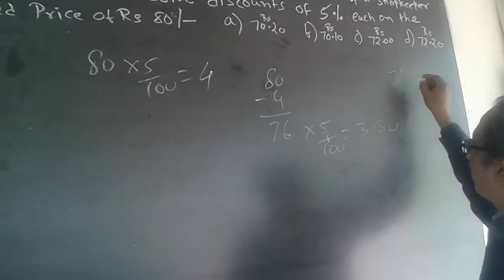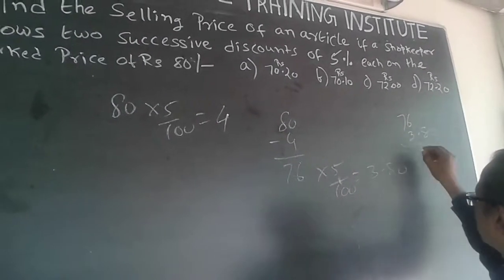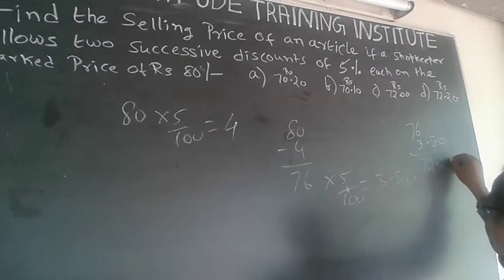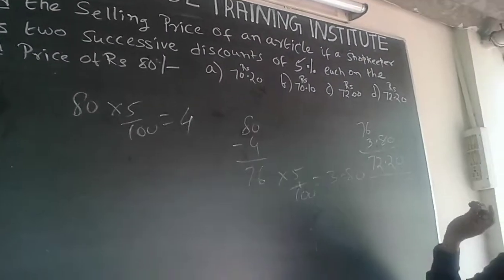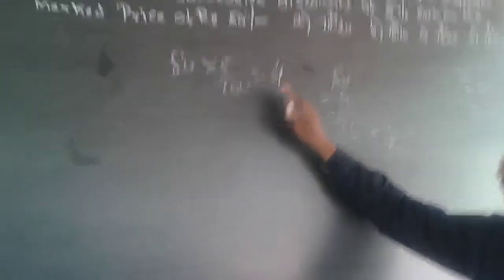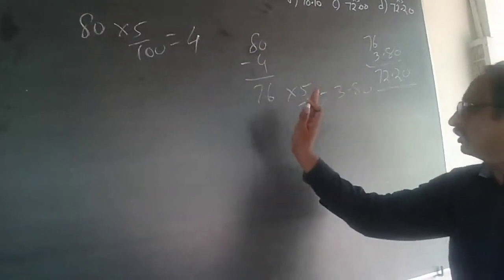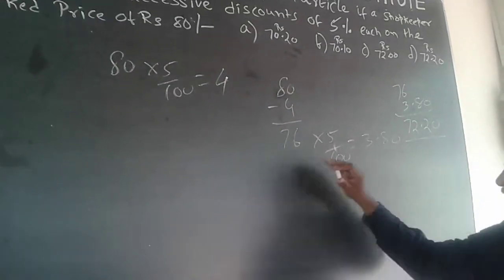So the actual price or the selling price will be 76 minus 3.80, which equals 72.20. The answer is 72.20. This is the simple way of doing it. First, I discount 5% and get 76. Again, I discount 5% on this 76 and get 3.80, minus that to get 72.20.